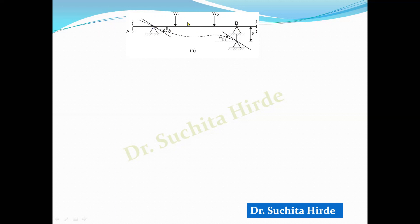If the member is AB, we get the final end moments MAB and MBA. Consider this part of the continuous beam. Suppose it is subjected to a certain load. There is rotation of joint A, there is rotation of joint B, and there is some sinking of support. So this is a general case of part of a continuous beam.